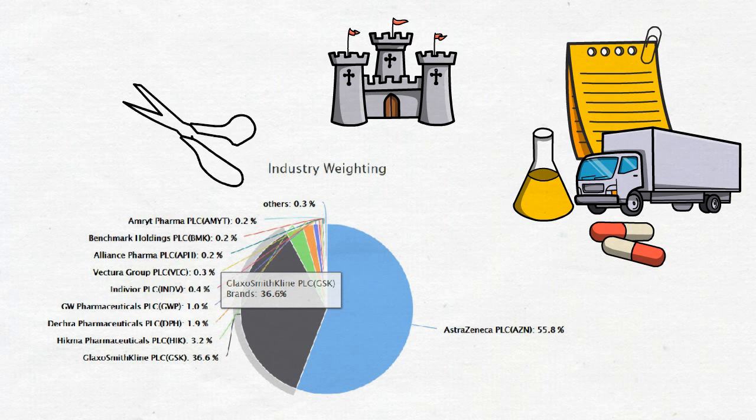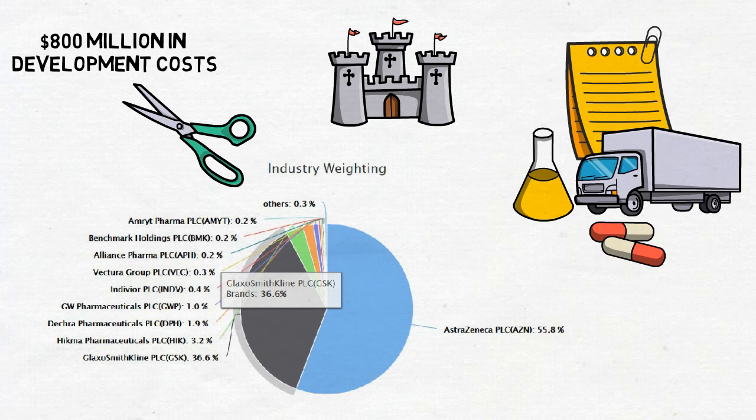Also Glaxo's operating structure allows for cost-cutting following patent losses to reduce the margin pressure from lost high margin drug sales. Overall, Glaxo's established product line creates the enormous cash flows needed to fund the average 800 million dollars in development costs per new drug.